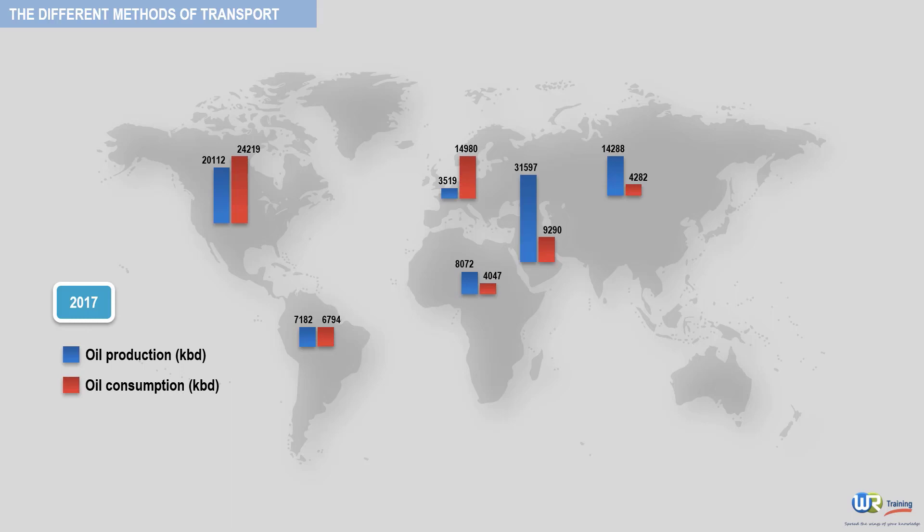In red are the corresponding consumption figures, also expressed in kilo barrels of oil per day. A quick comparison of the location of world oil reserves and the consuming areas shows immediately that many production areas like Russia and the Middle East are far from the major consuming areas like Europe and North America.